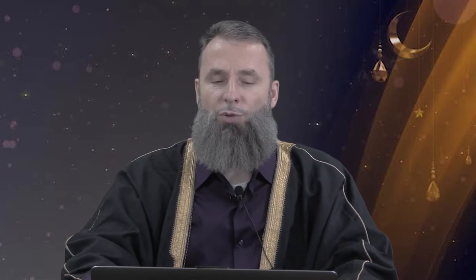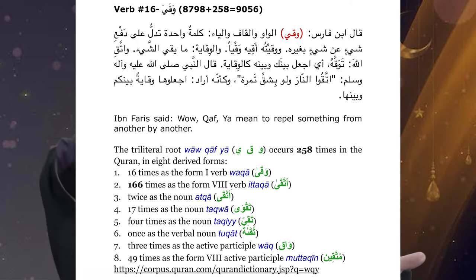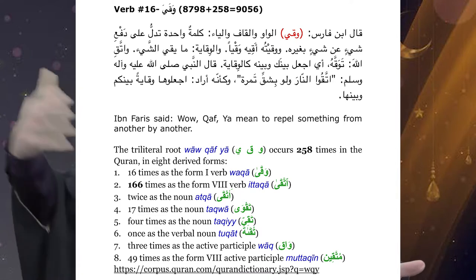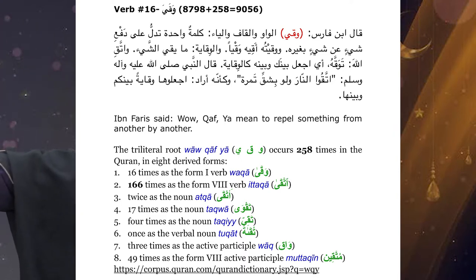It is the three root letters Al-Waw, Al-Qaf, and Al-Ya. Ibn Faris rahmatullahi alayhi tells us these three root letters mean for you to protect yourself from something by means of another thing — by means of a third thing. So you are seeking to protect yourself from A by utilizing B, for example.